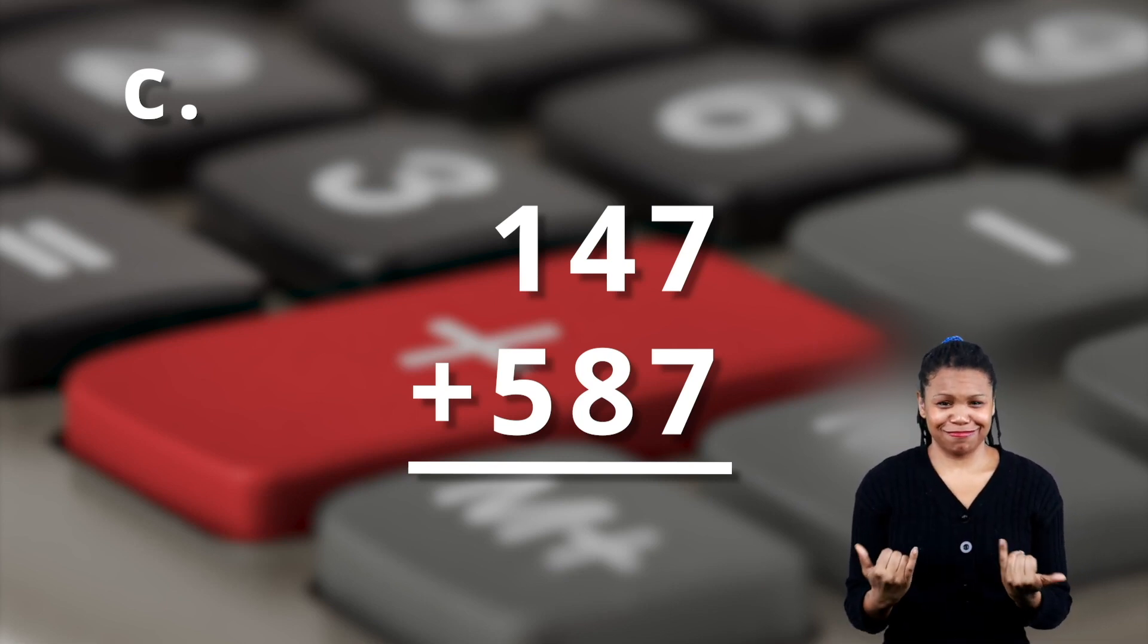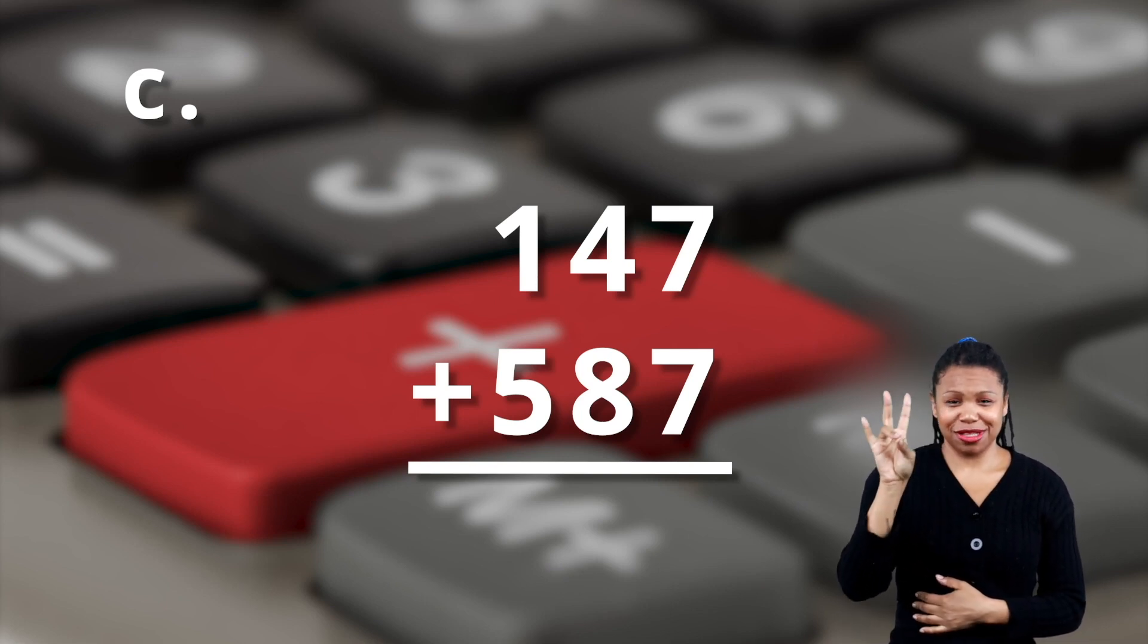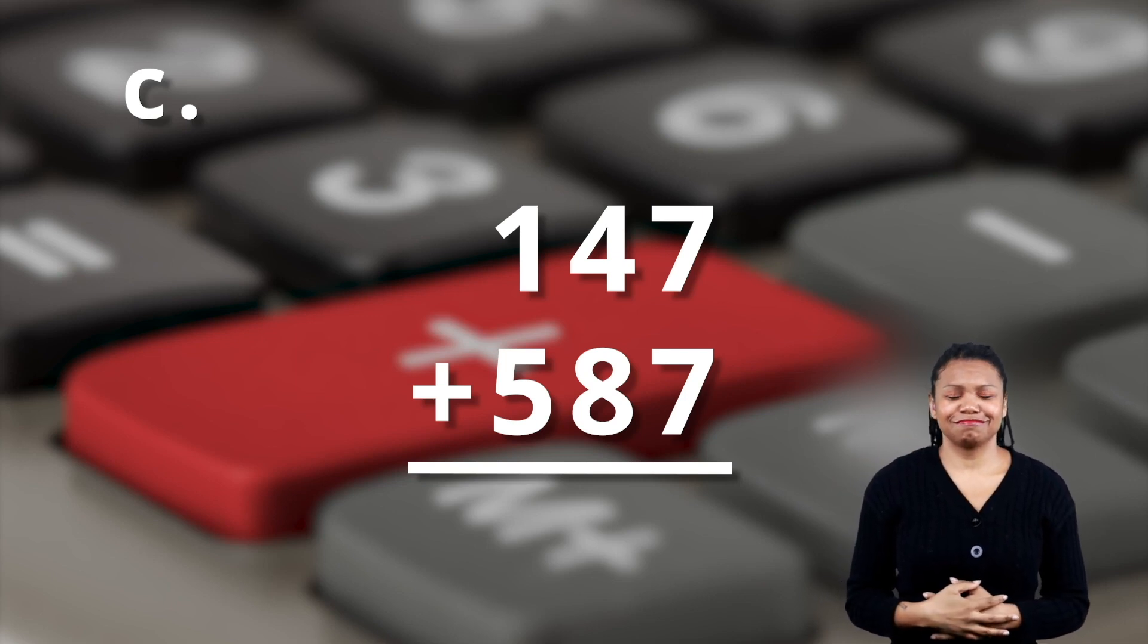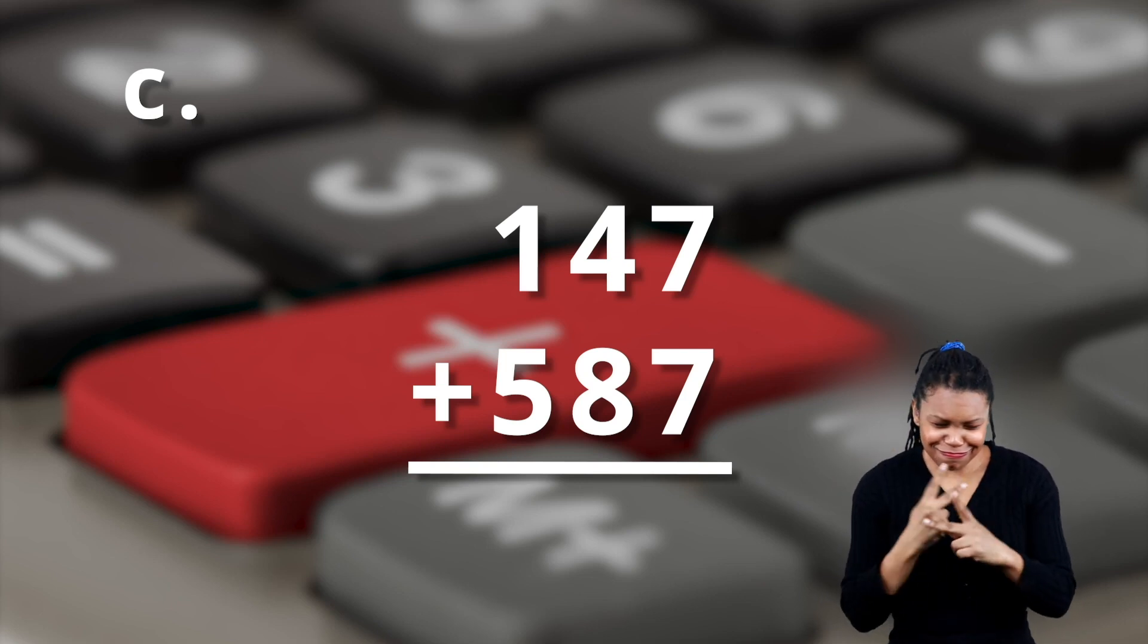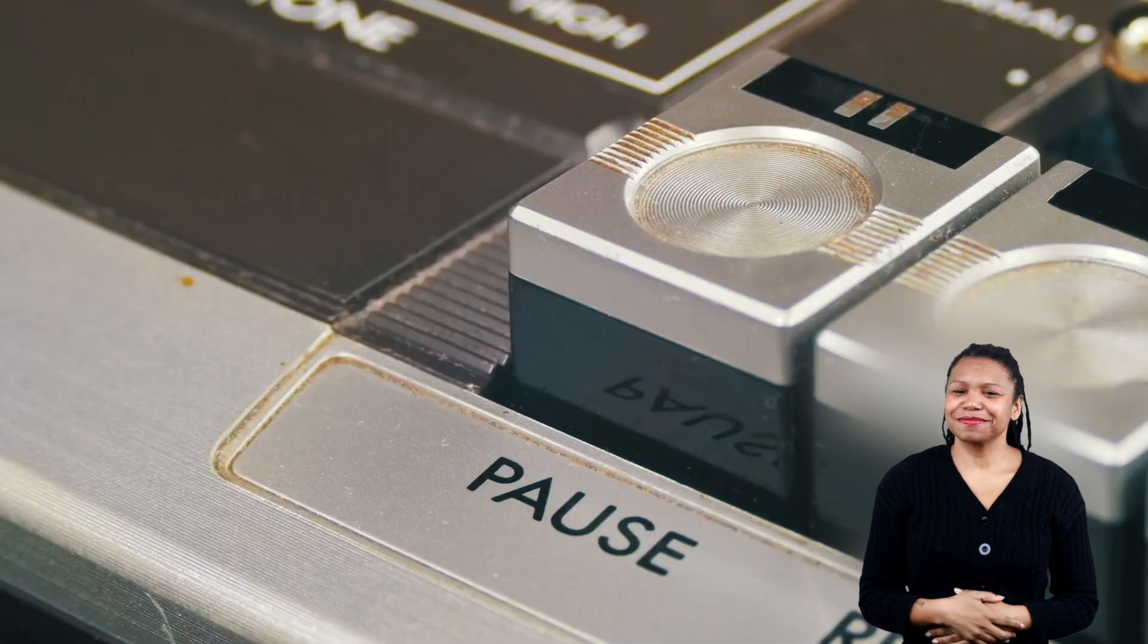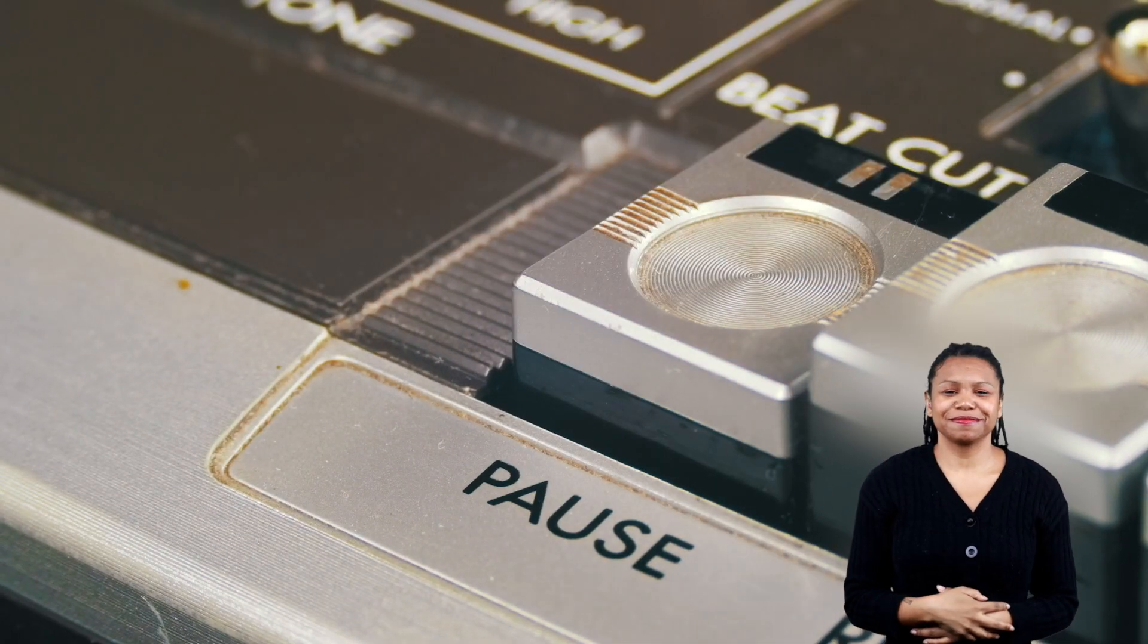Let's get something a little more difficult here. Example C. A hundred and forty-seven plus five hundred and eighty-seven. I'm going to give you a minute to see if you can figure this one out for yourself. Go ahead and pause the video and see if you can get this one on your own.